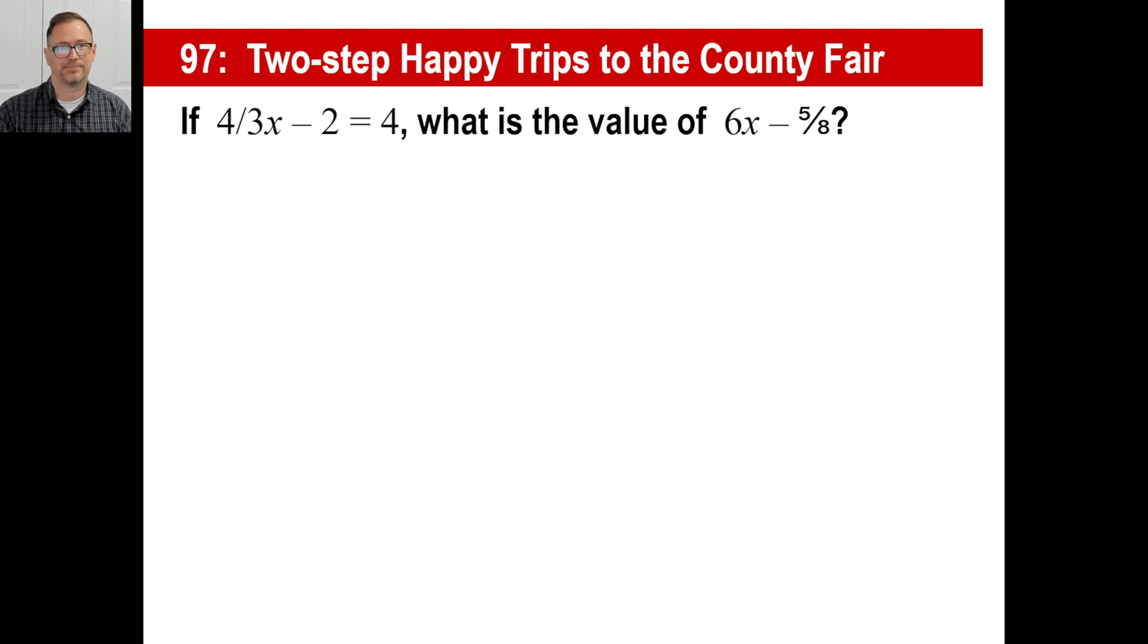Okay, we'll try one more. All right. If 4 thirds x minus 2 equals 4, whatever. Well, let's just figure out what x is over here first, right? We're just going to add 2 to each side. So 4 thirds of x is equal to 4 plus 2, which is 6. To find out what x is, we multiply both sides by 3 fourths.